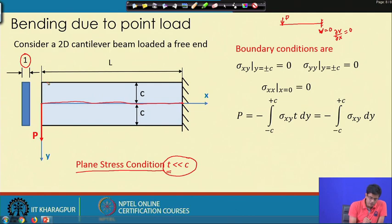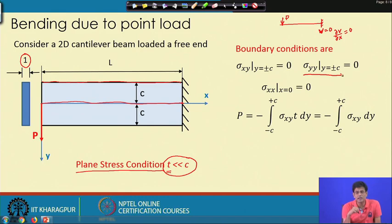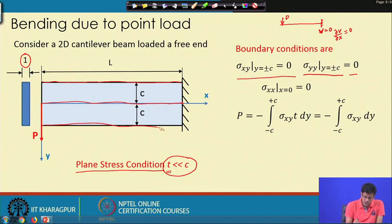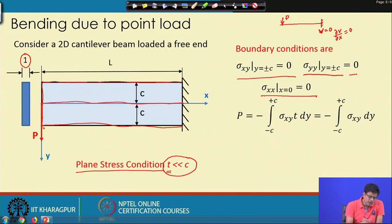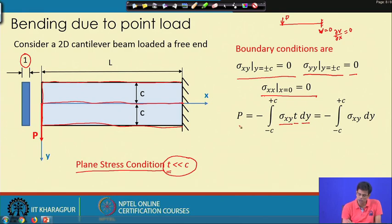On the top and bottom surfaces there is no load, which implies σyy = 0 and σxy = 0 at y = ±c. On the free end face, σxx = 0 since there is no horizontal load. The total resultant shearing force means the integral of σxy·T·dy from -c to +c equals P.